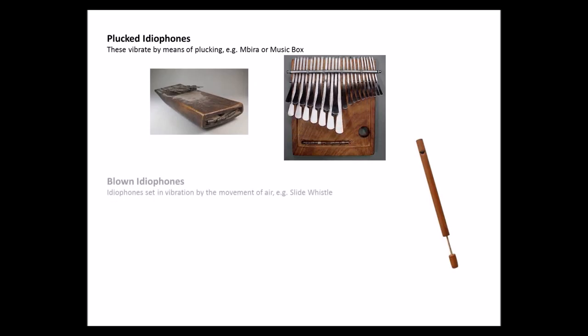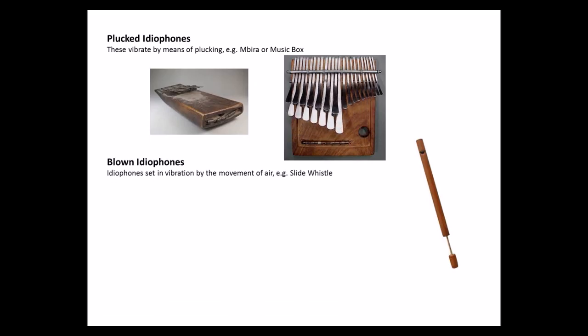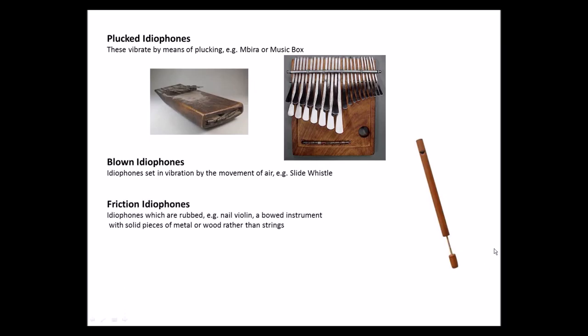Then we have the blown idiophones — idiophones set in vibration by the movement of air, like the slide whistle over here. Then we have friction idiophones, which are idiophones that are rubbed. For example, the nail violin — a bowed instrument with solid pieces of metal or wood rather than strings.